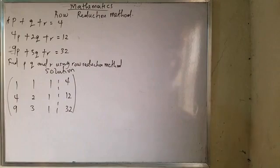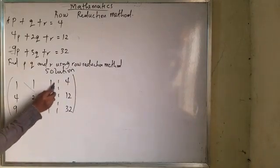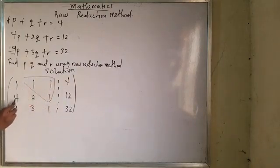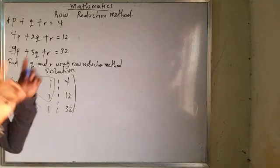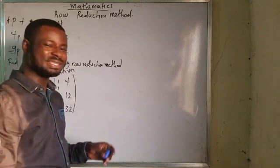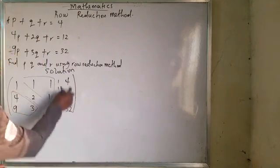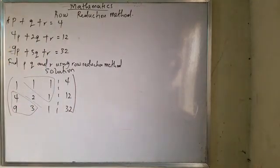Now, how do I get my row reduction? Everything here becomes 0, everything here becomes 0, and here, which is the diagonal, becomes 1, 1. It means the inverse equals to the number here.